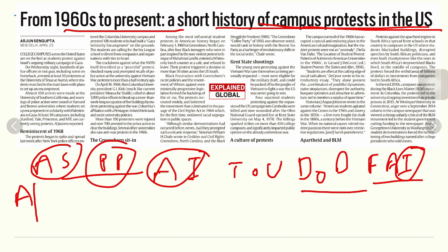Critics argue that in the name of freedom of expression, protesters sometimes cross boundaries — violent protests should not be part of such activity. They also argue that certain ideologies with no connection to the country are raising their heads through universities, specifically ultra-left liberal ideologies that may not have a place in the mainstream of society but find expression through these institutions.